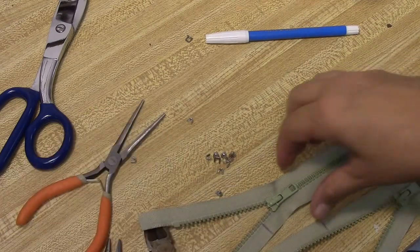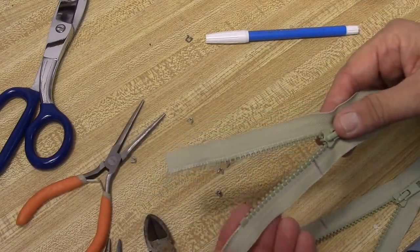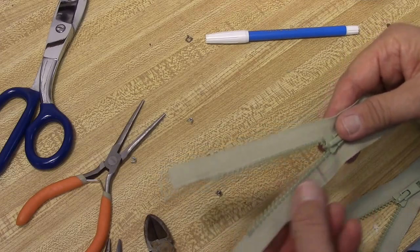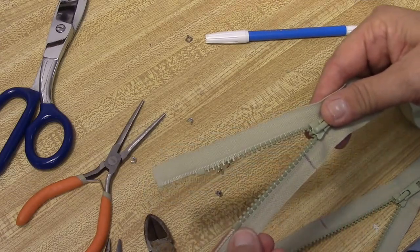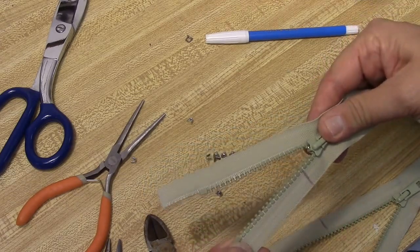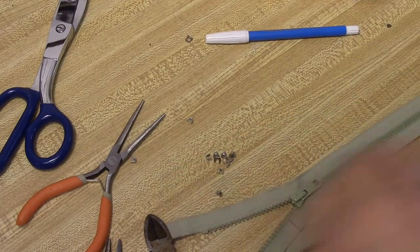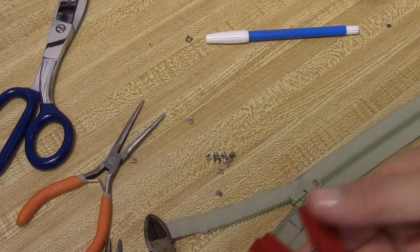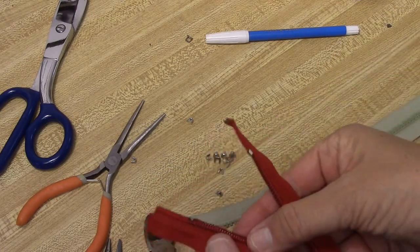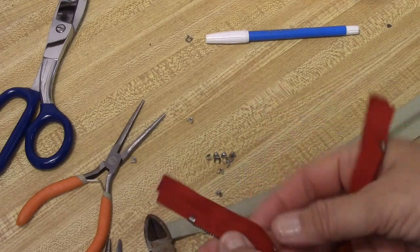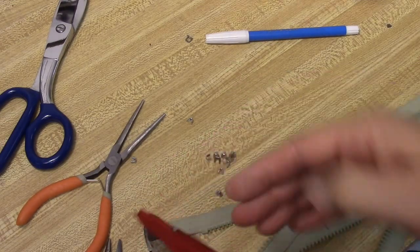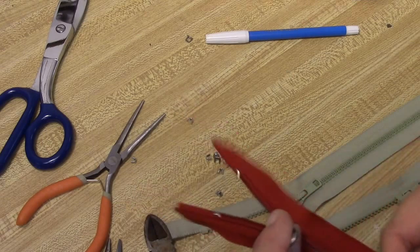So basically a little anatomy. You have a top stop and this is a plastic zipper and this is called a molded tooth zipper. This is just a piece of plastic. On a metal zipper, usually you have something that looks like this. And this is a top stop right there. It's metal. It clamps on right where you want your zipper to end, just like that.